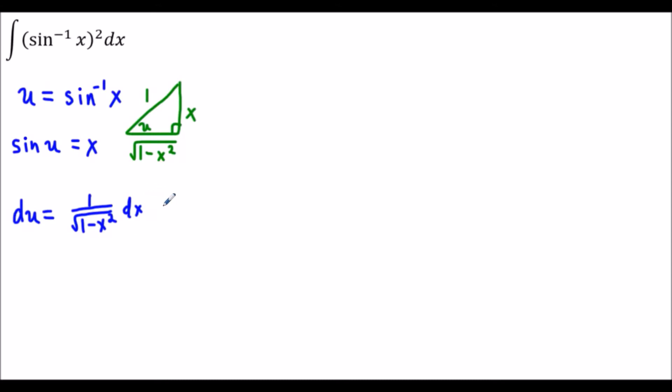What we're going to do now is solve for dx. We could solve for dx if we multiply both sides by radical 1 minus x squared. We'll have radical 1 minus x squared times du is equal to dx.